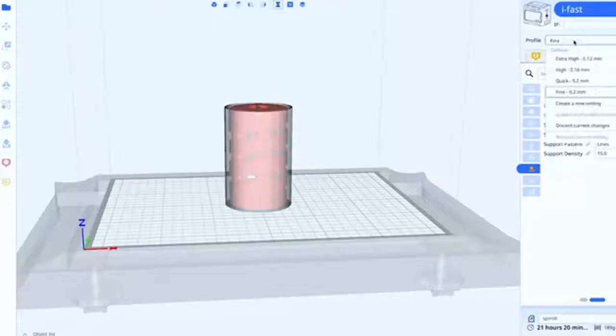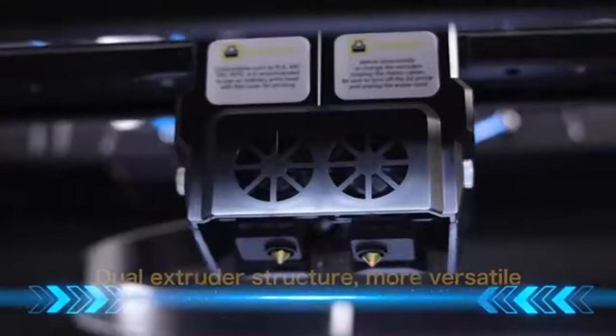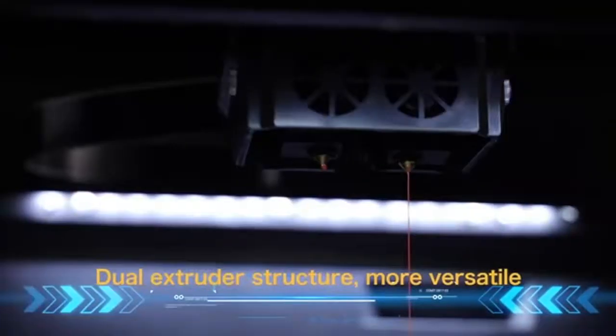Freedom in the choice of filament. Kiti iFast can print almost all kinds of filaments which are suitable for FDM 3D printers on the market, such as PLA, PLA+, ABS, PETG, nylon, etc.